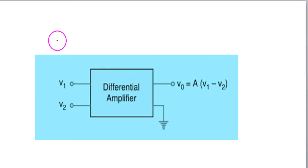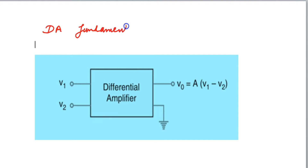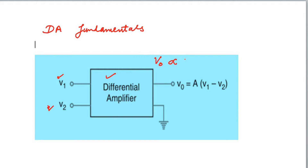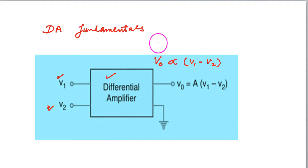Welcome to this overview of Differential Amplifier Fundamentals. This is an ideal differential amplifier — we have two inputs V1 and V2, and we get an output V0. The output is proportional to the difference between the two input signals, and this proportional sign is replaced by a constant.